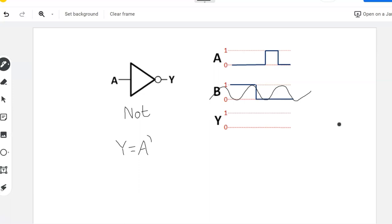So the whole time that A is equal to 0, Y is going to be equal to 1. And then about this point, A jumps high, so Y will drop low. It will remain low as long as A is high. And then at the end, Y jumps back up high again. And you can see that A and Y are mirror images of each other, because Y is just the opposite of A.